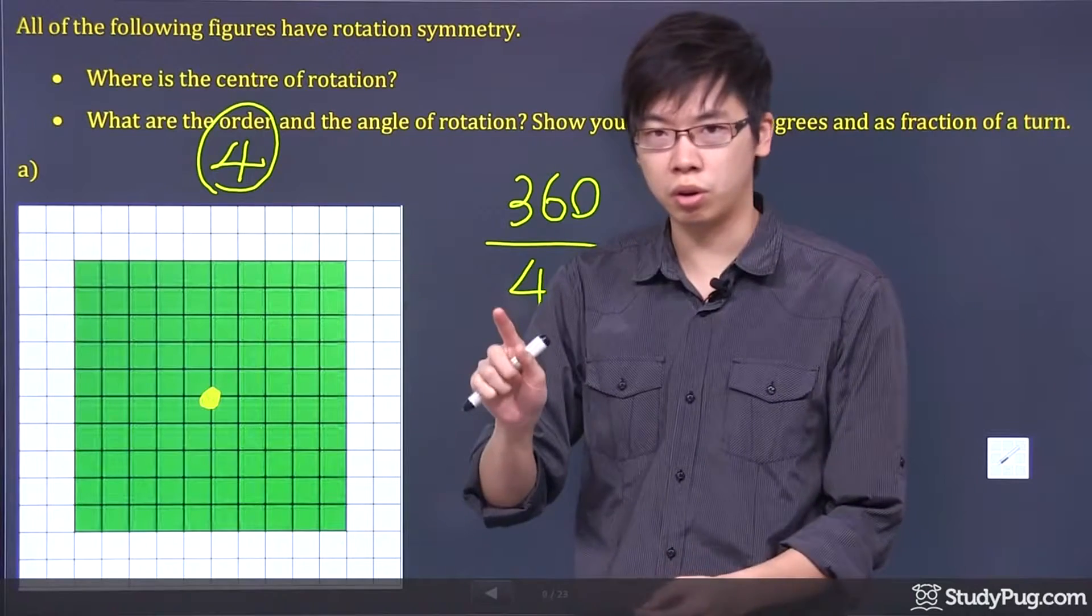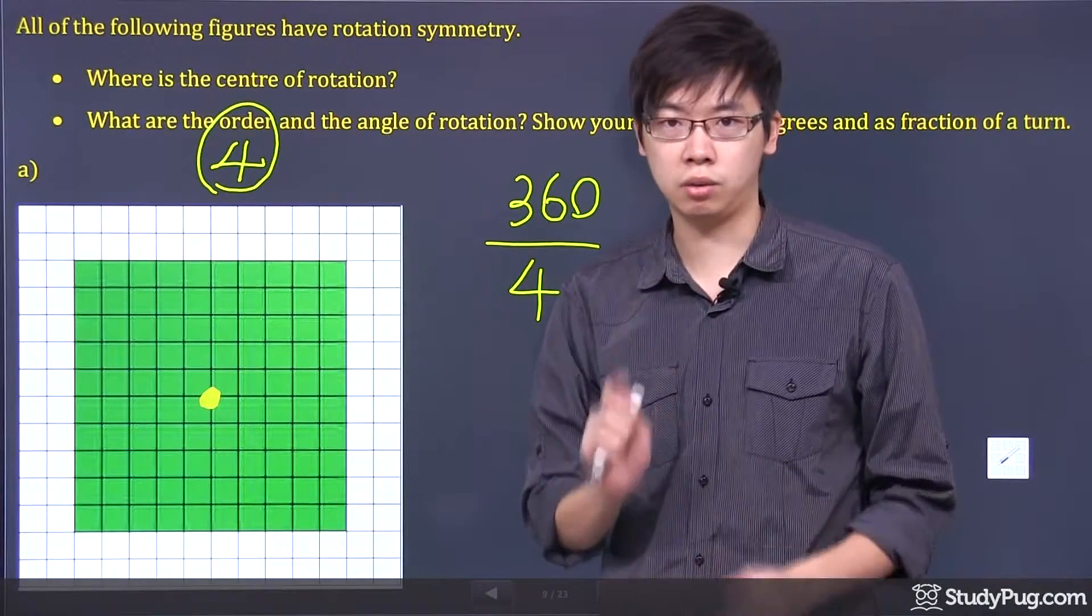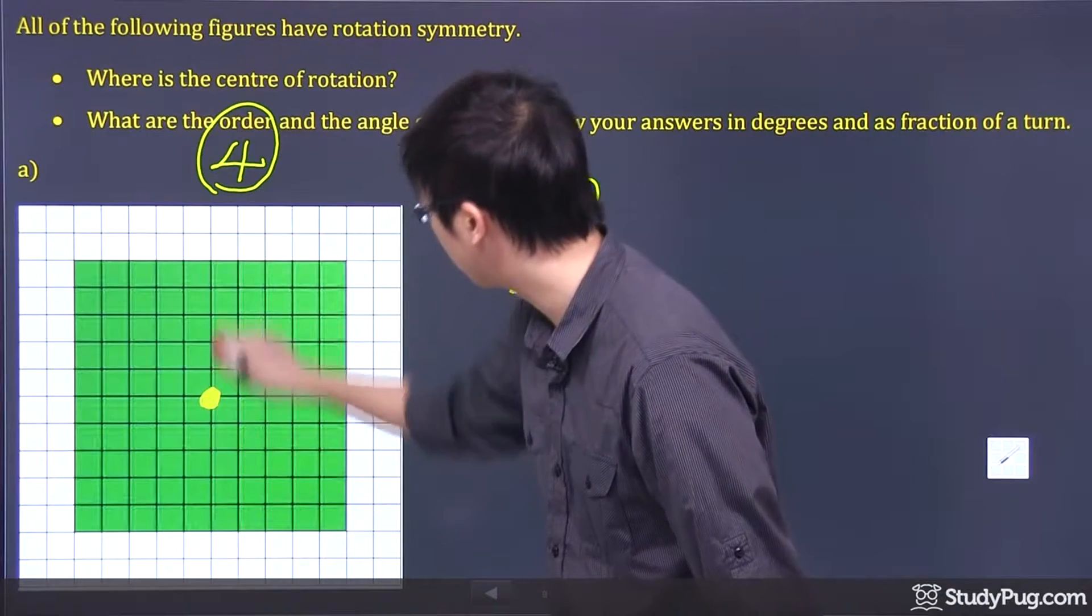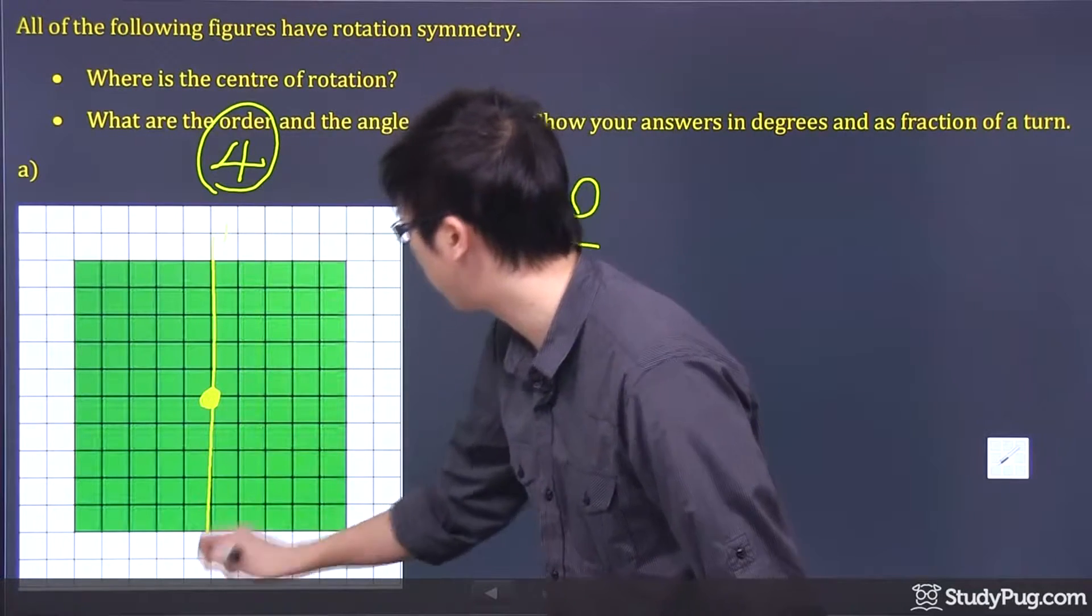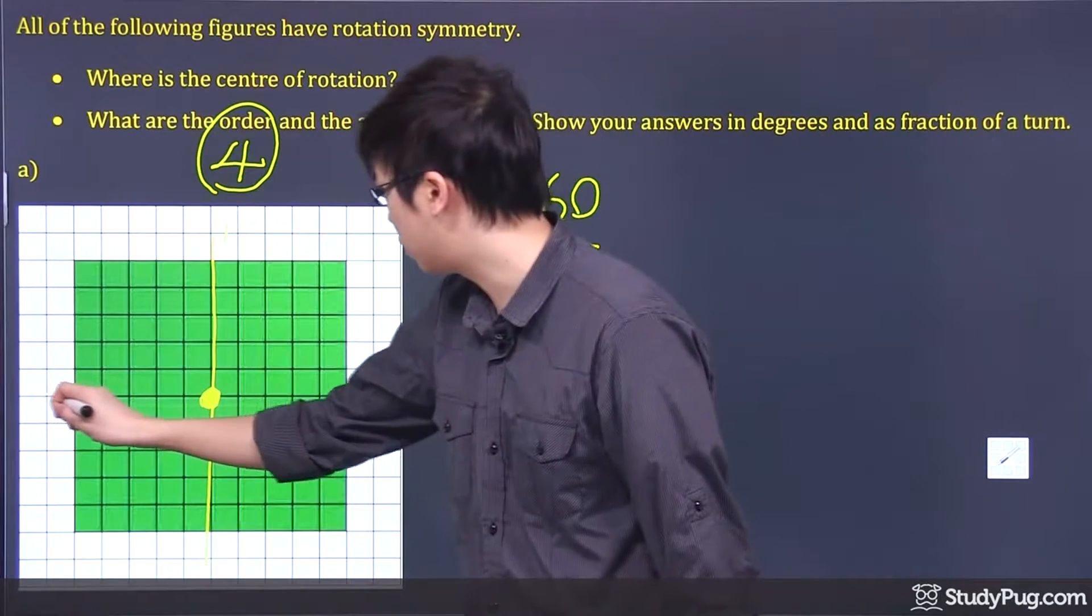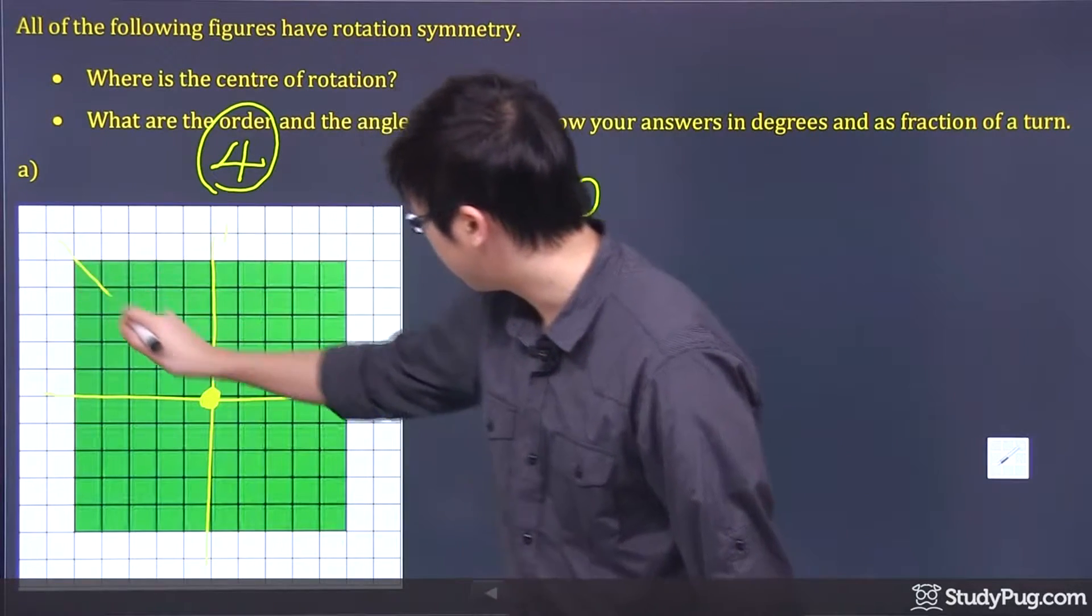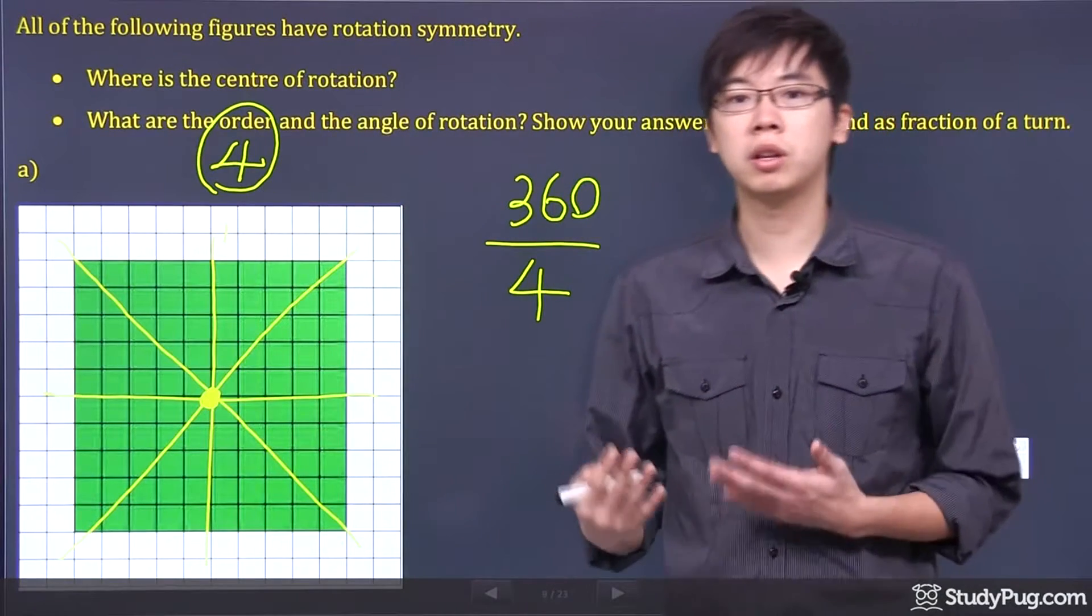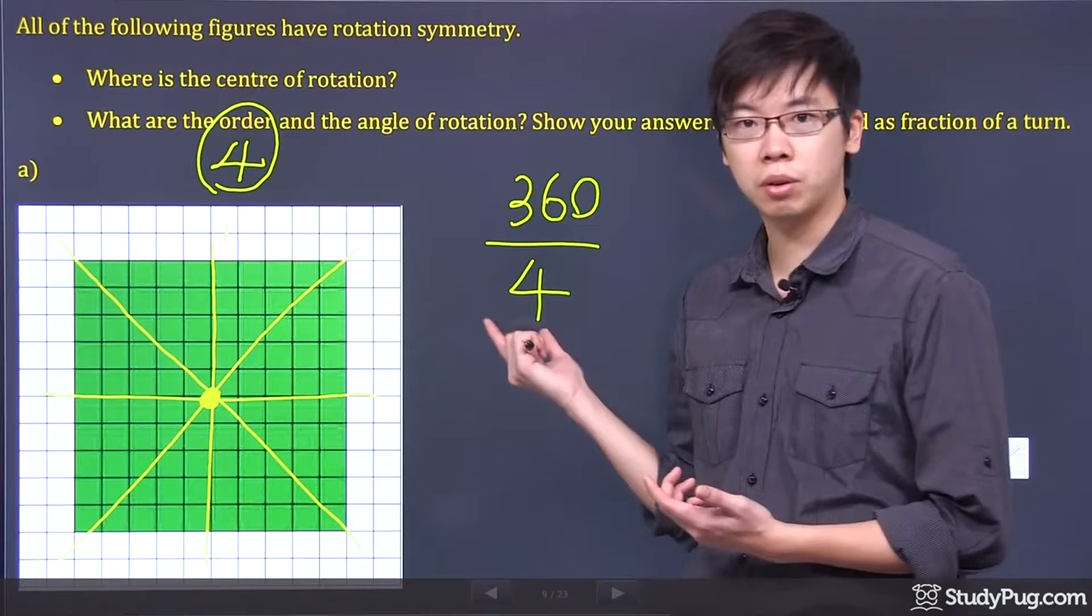Now, once again, to figure out the order, all you have to do is figure out the line of symmetry that you have. So let's actually quickly draw that. So we've got one line going down this way. This is one symmetrical line, and this is two, and this is three, and this is four. So with four lines of symmetry, you can actually relate that to the order number.